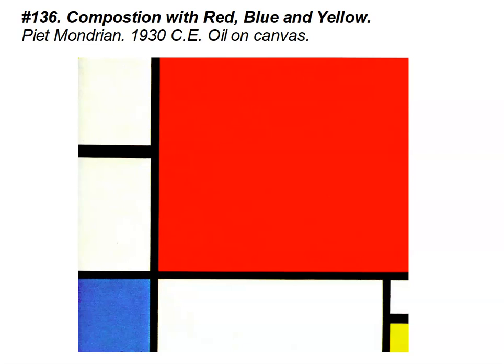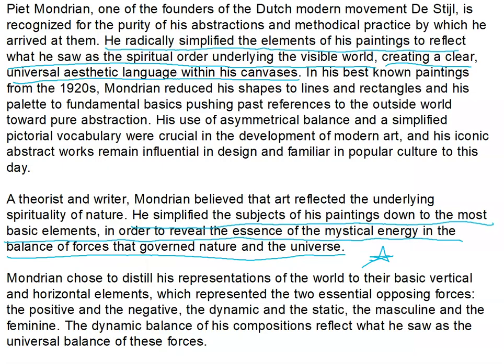What Mondrian did was take something and simplify it down to its most basic core. Every work of art is made up of lines, colors, and shapes — basic elements of art. He kept simplifying down to the most simplified core. In his best-known paintings from the 1920s, Mondrian reduced his shapes to lines and rectangles and his palette to fundamental basics, pushing past references to the outside world towards pure abstraction.